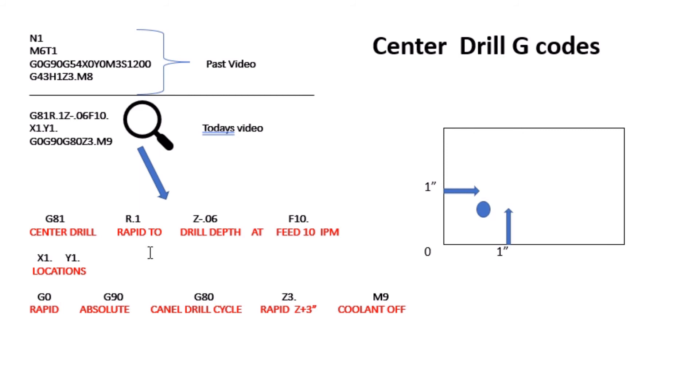The G80 is going to cancel your drill cycle. You always want that because you want your machine to say I'm done drilling. So if it ever sees these variables again or something else like a G83, which we'll get into in the future, it will know this G81 is now done. We are over with the center drill cycle. Rapid three inches above your part again—there's your G90, you're absolutely rapid-ing to three inches above your part. Your M9 will be your coolant off.